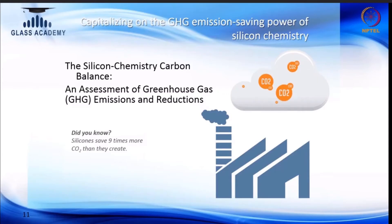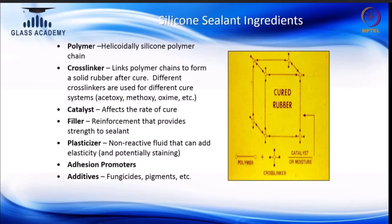Now we are going to go into the details of what a silicone sealant is, because this is the product which is going to be used for construction applications — ideally for facades, essentially structural glazing, insulating glass, weather seal, and other applications. The essential thing to understand here is that the silicone sealant is made with a lot of materials added to it, and one of the main things impacting the properties of this product is the polymer.